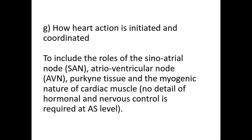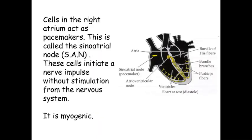Welcome to this biology session where we're going to look at how the heart rate is initiated and coordinated. Within the heart we have what's known as the SAN, which is the sinoatrial node, and the AVN, which is the atrioventricular node. You do need to know what the AVN and the SAN stand for.